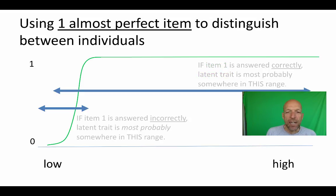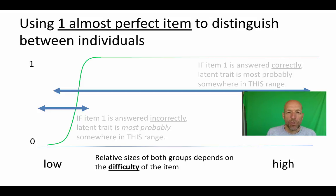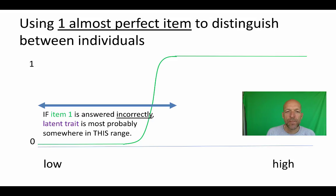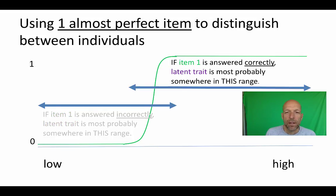Now this is a very easy item — a lot of children answer the question correctly. The relative size of both groups depends on the difficulty of the item. Since this is a very simple item, we can only distinguish between a small group of children that do not know a lot about mathematics and a very large group that knows a bit more. Suppose instead we have a slightly more difficult item. If item one is answered incorrectly, the latent trait is most probably somewhere in this range. So now we can distinguish between two groups that are almost equal in size.